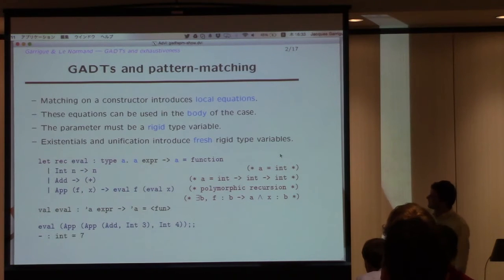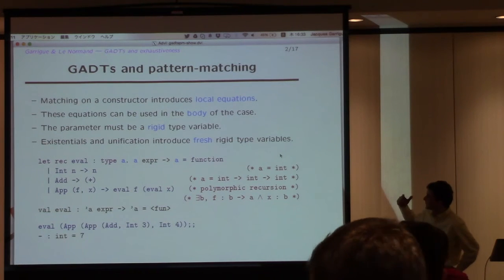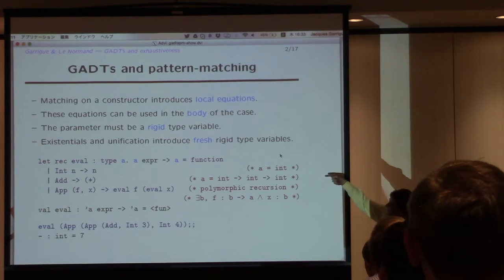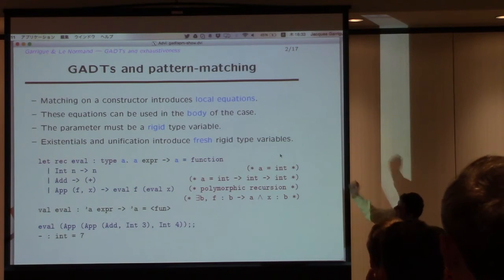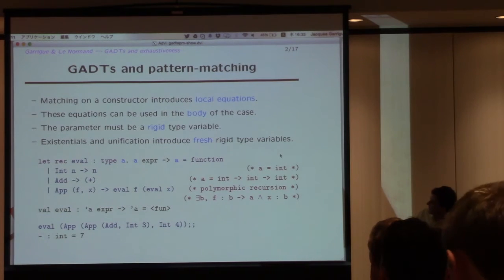So the point is that when you do pattern matching with GADTs, you introduce local equations. You have an example with the plus-eval interpreter, where int introduces the equation a equal int, add introduces the equation a equal int, and app will introduce local existential variables. And we are using here polymorphic recursion.